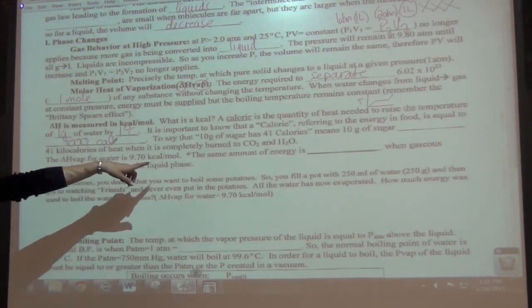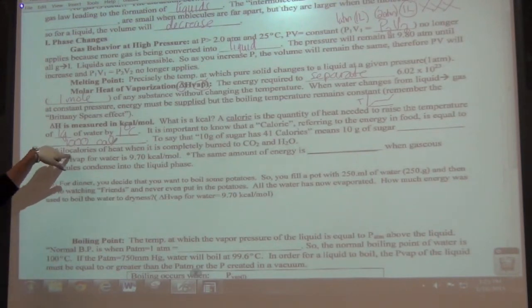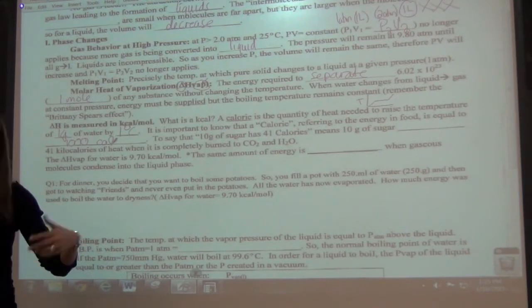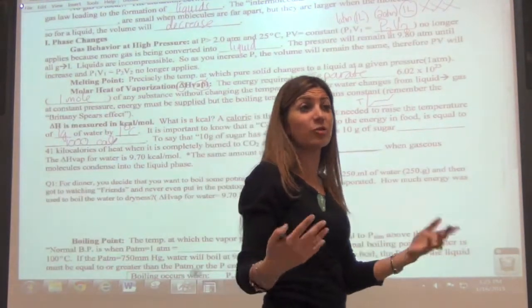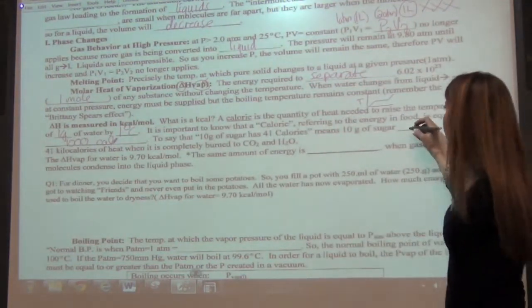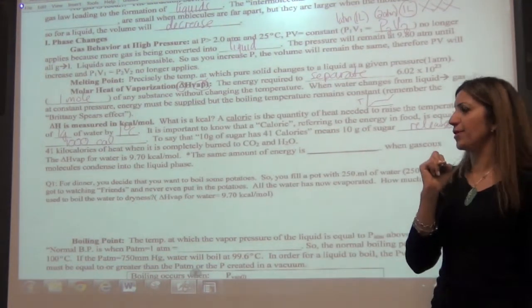To say that 10 grams of sugar has 41 calories means 10 grams of sugar did what to the kilocalories of heat when it's completely burned? So what has to happen if you're burning it, then what's happening to the energy? You're actually doing what? Releasing or absorbing energy? Releasing. Good. Releases 41 kilocalories of heat when it's burned.